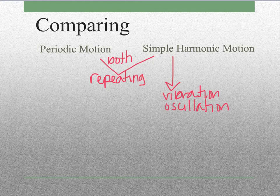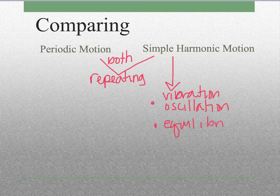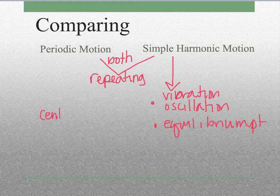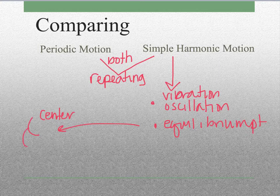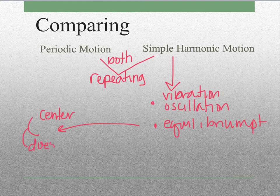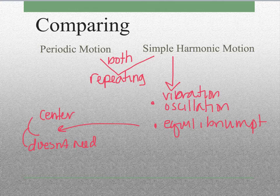Simple harmonic motion also needs an equilibrium point. So periodic motion could have a center sometimes, or it might even have an equilibrium point too. But it also might not, it could also have neither. It doesn't need this because it's just anything that repeats. Like a calendar doesn't really have a center, but it still repeats.